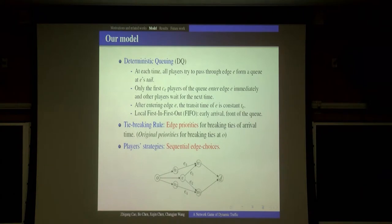What is our model? In our model, there are two critical and crucial differences. The first one is we use edge priority to break ties.